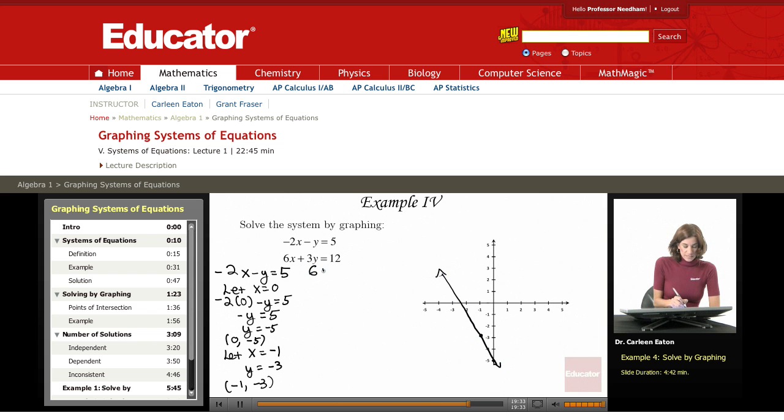Next equation, 6x plus 3y equals 12. I'm going to go ahead and substitute that in for x, which will give me 3y equals 12. Dividing both sides by 3, I get y equals 4.